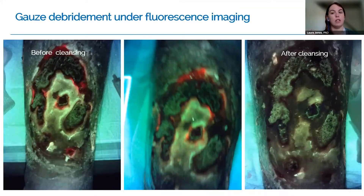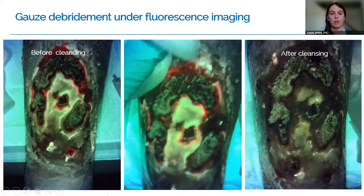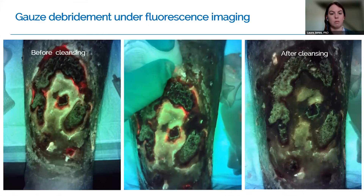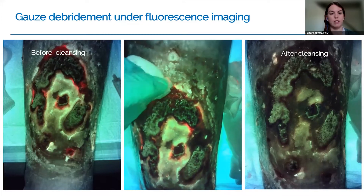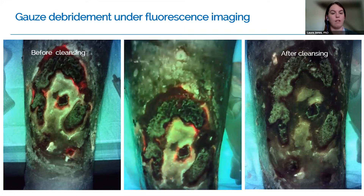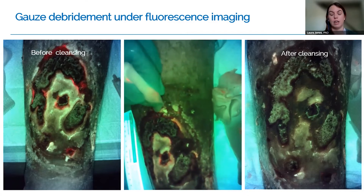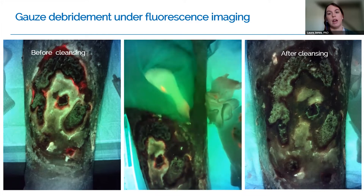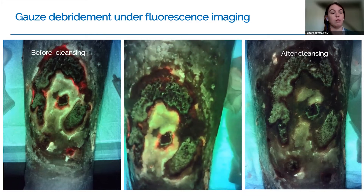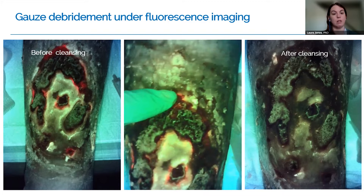This can have implications in cleaning and debridement. Before cleaning, you can see the red fluorescence around the edges. And if you watch this video in real time, the clinician is coming in with some gauze, cleaning away that red fluorescence, and you can see it coming off directly as she goes. In real time, you really have that feedback of how the cleansing is progressing. And in the image to the far right, after cleansing, she was able to remove all of those areas of red fluorescence, decreasing the bacterial load.